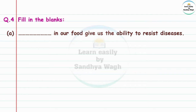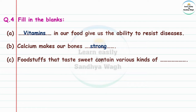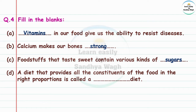Question 4 - Fill in the blanks. Enough food gives us the ability to resist diseases — answer: vitamins. Calcium makes our bones — answer: strong. Foodstuffs that taste sweet contain various kinds of sugar.